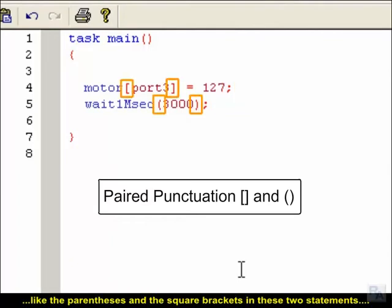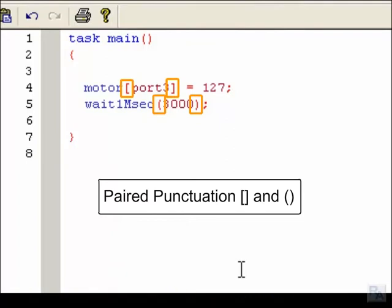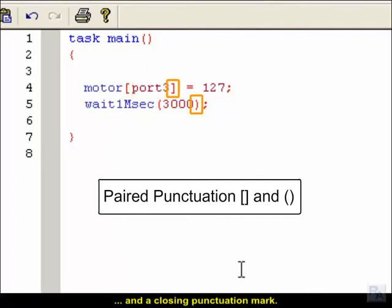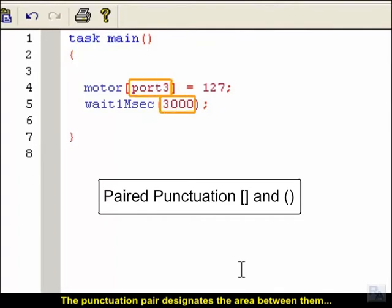Punctuation pairs, like the parentheses and square brackets in these two statements, are used to mark off special areas of code. Every punctuation pair consists of an opening punctuation mark and a closing punctuation mark. The punctuation pair designates the area between them as having special meaning to the command that they are part of.